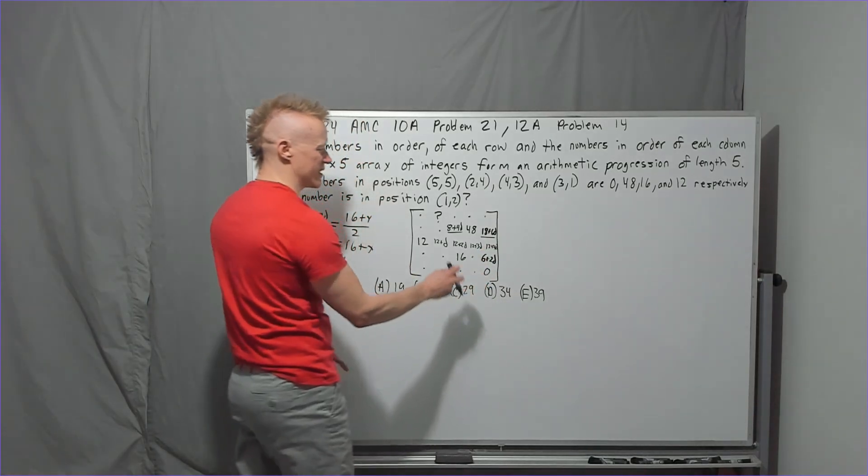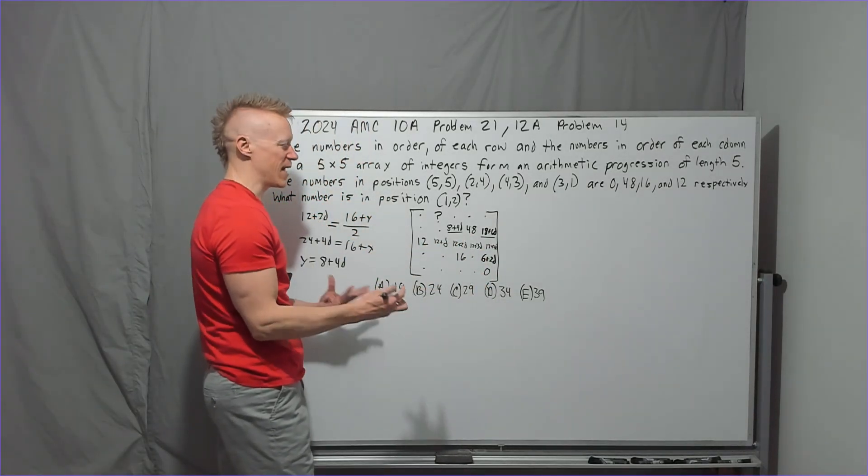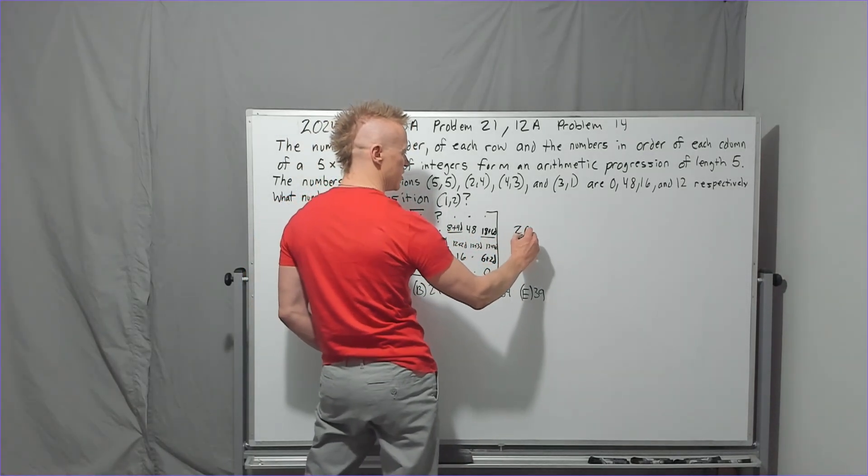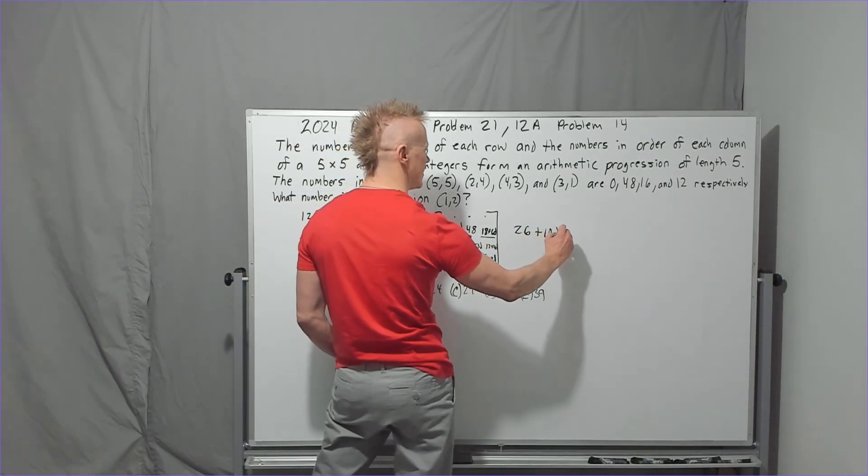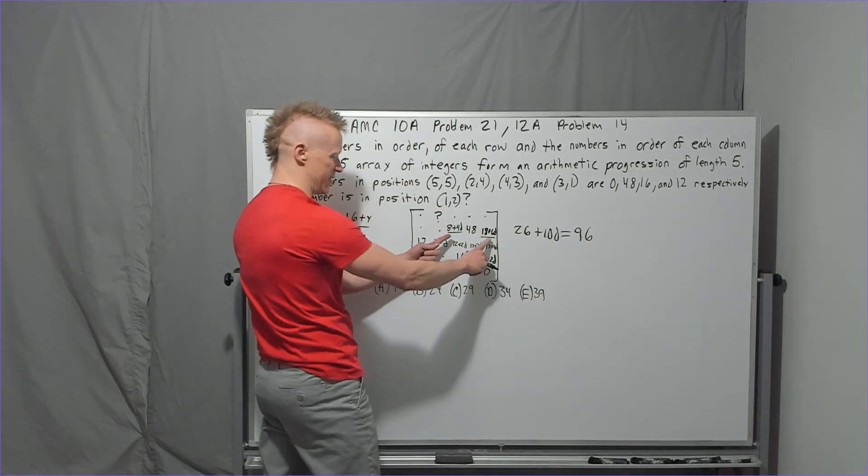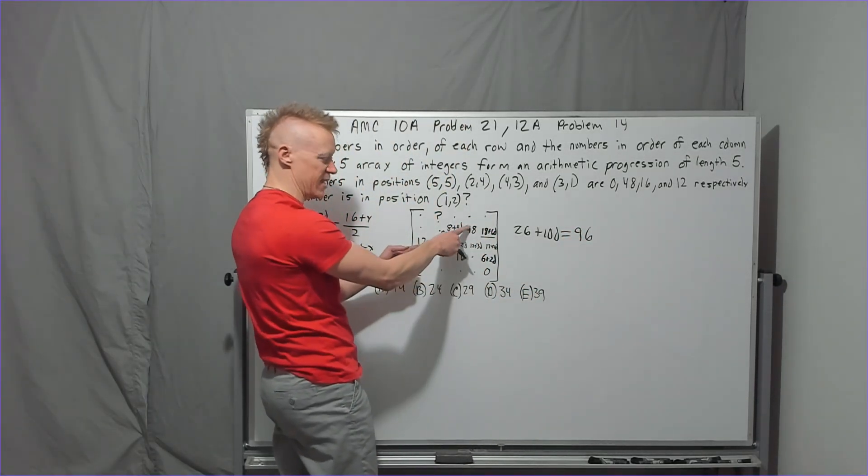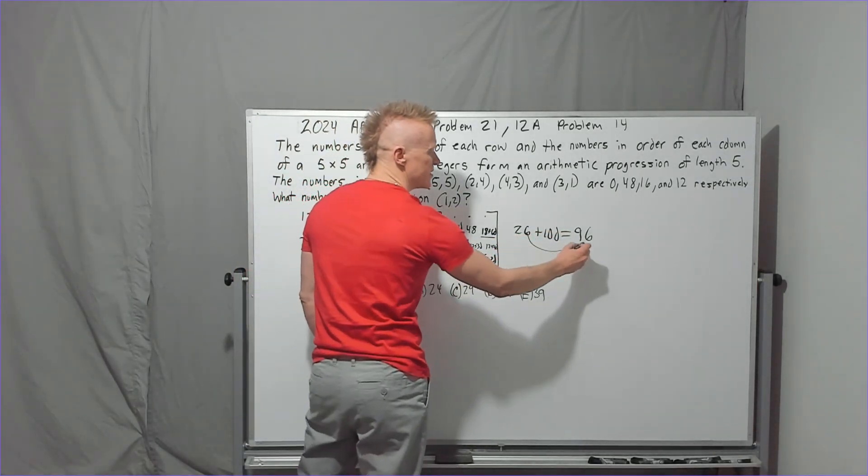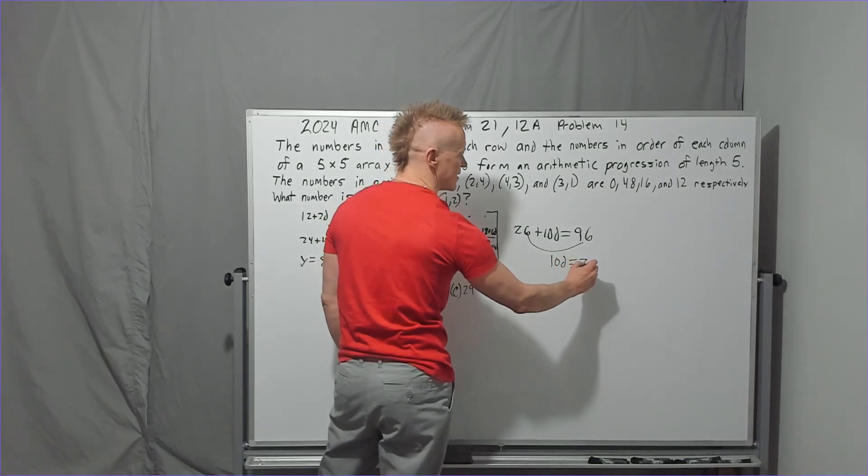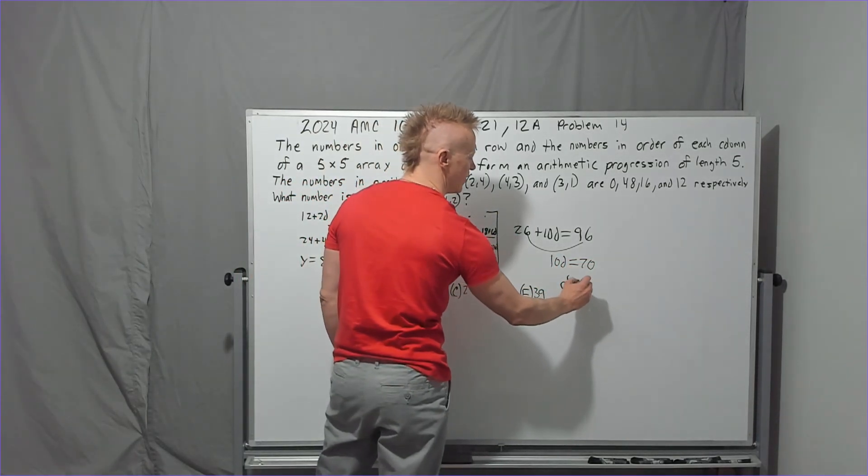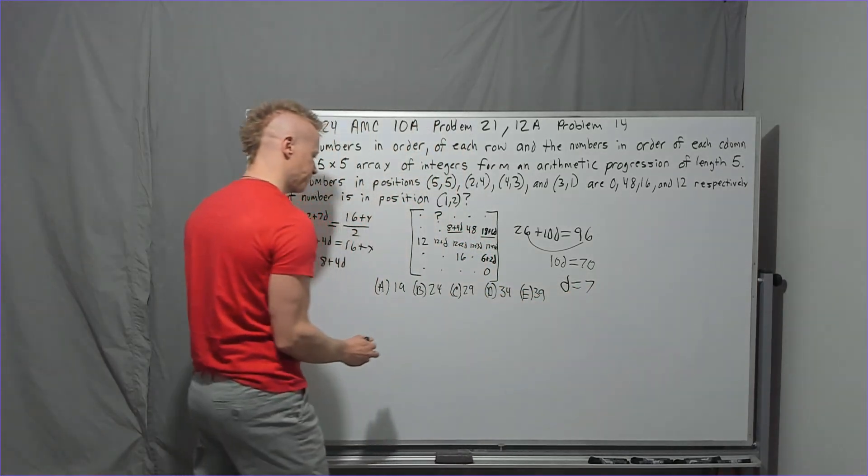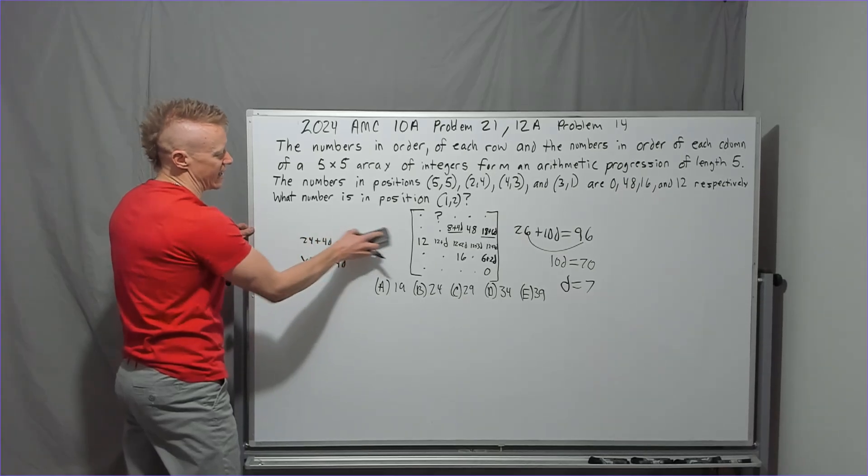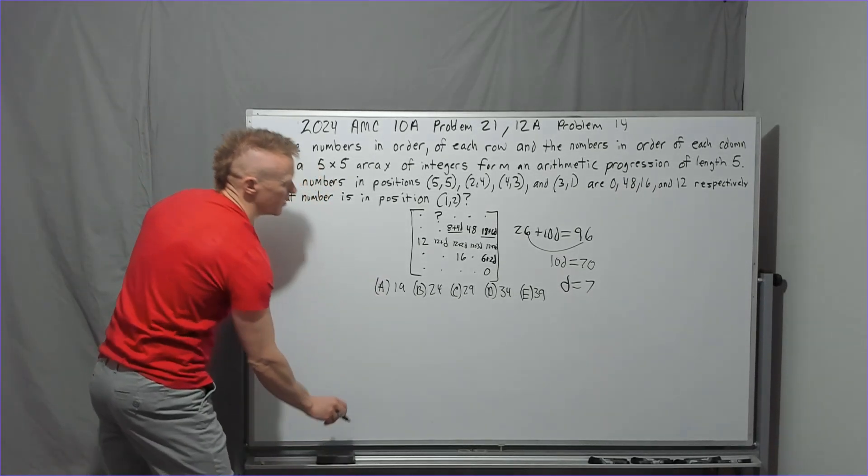Now again, this and this have to average to 48. That means they have to sum to 96. So if you have 8 plus 18, which is 26 plus 10D, it equals 96. Again, this plus this over 2 equals 48. Multiplying by that 2 to the other side, all in one step, subtract 26, 10D is now 70, and we found a value for D. So it's at that point, when you know, when I found what D was, that I just went ahead and started filling this in with numbers.